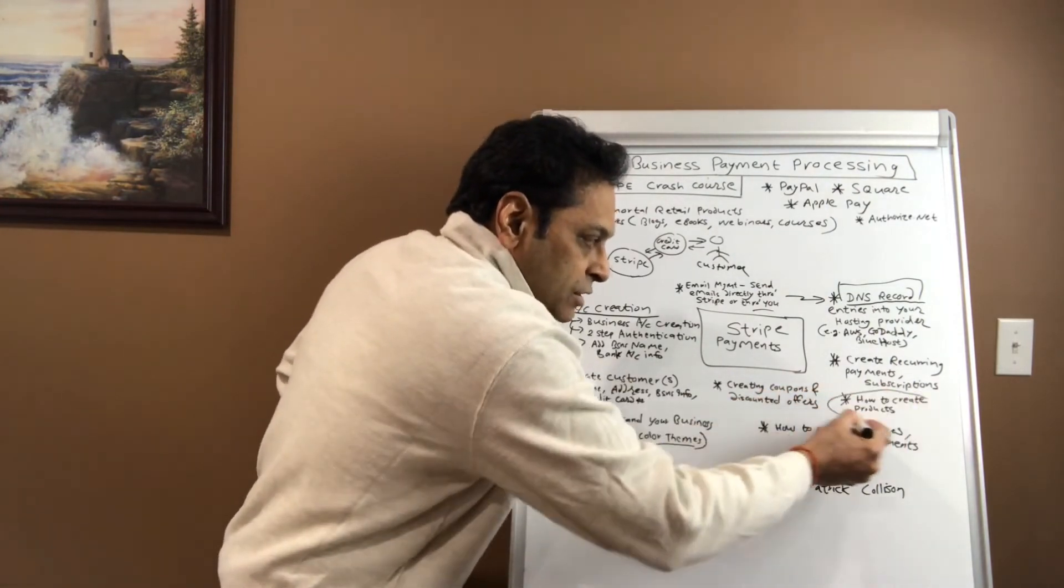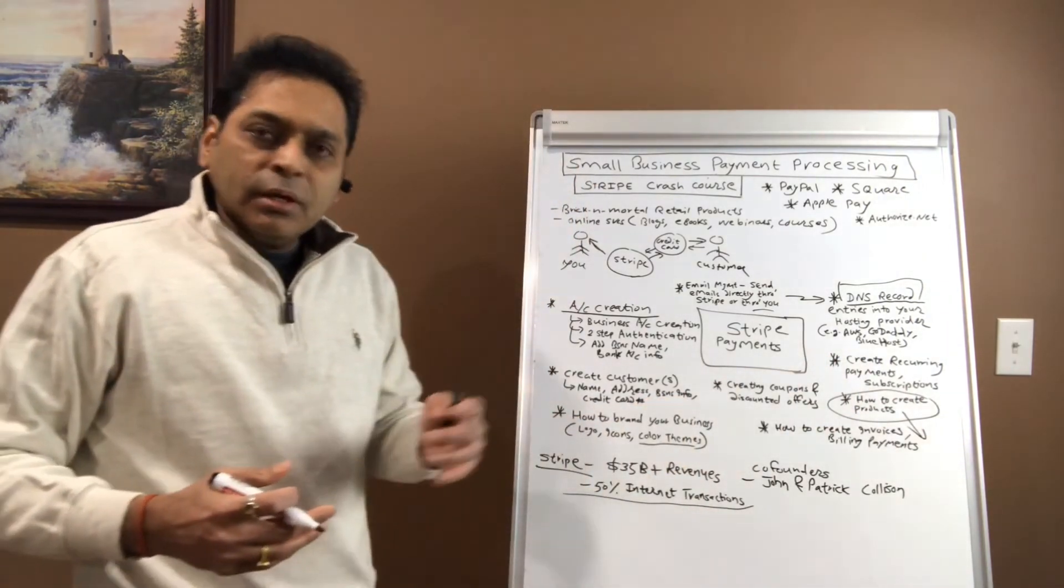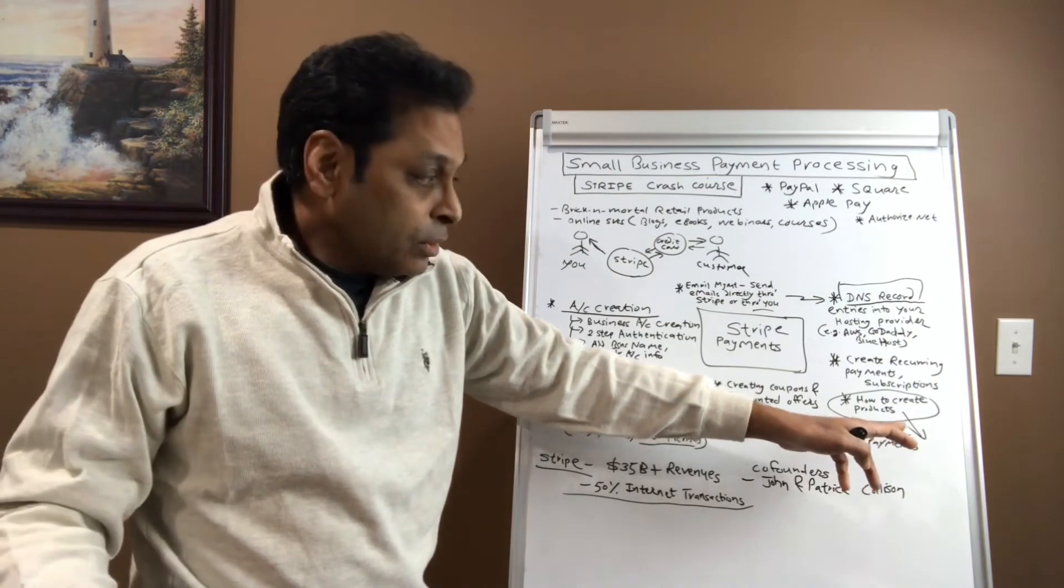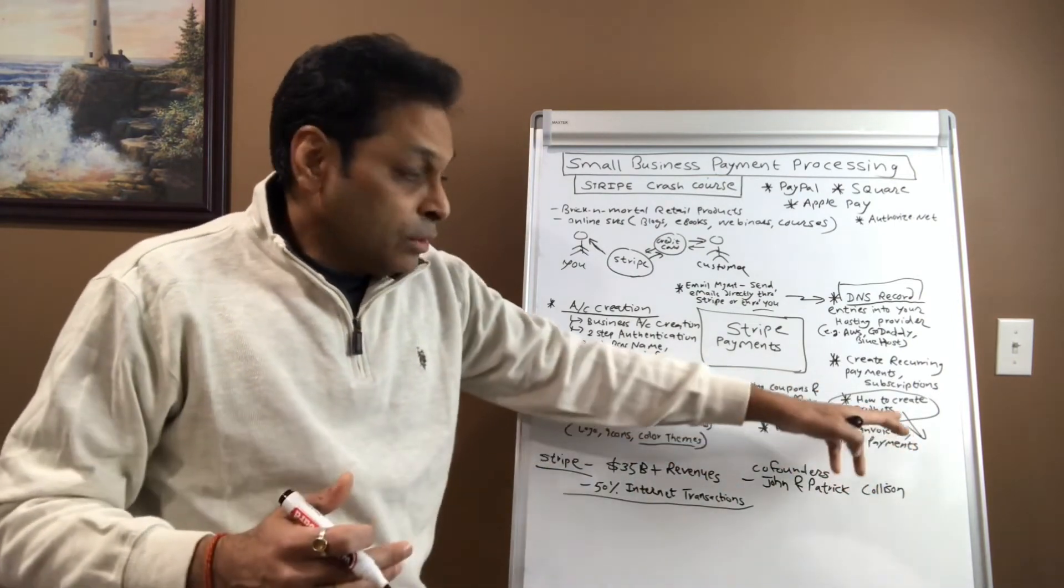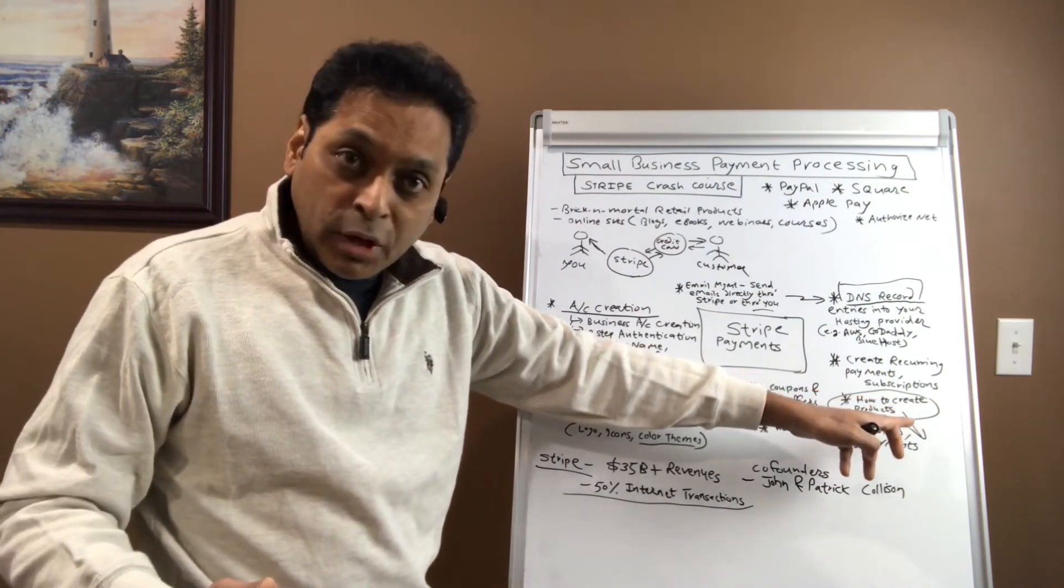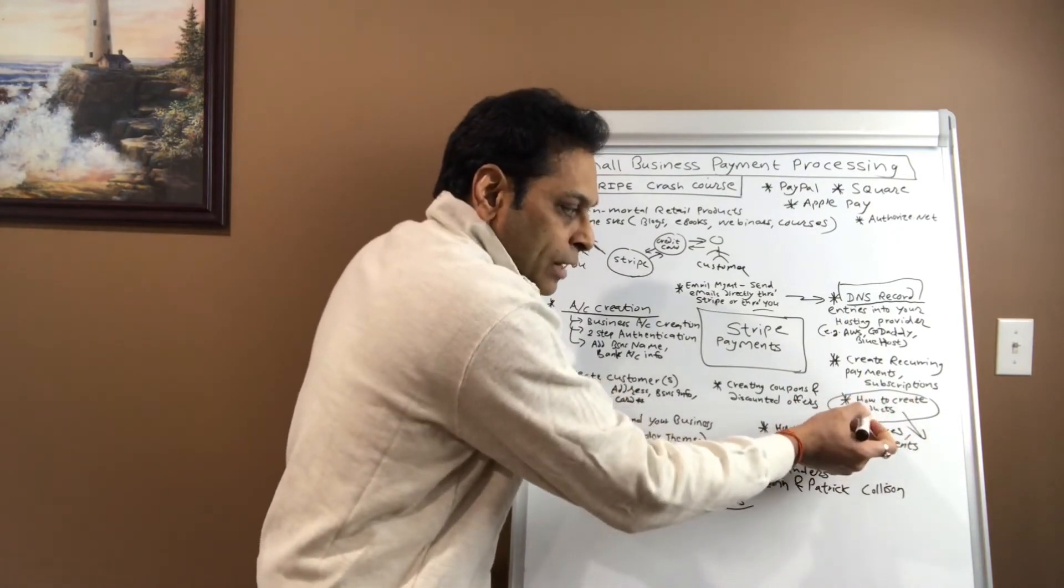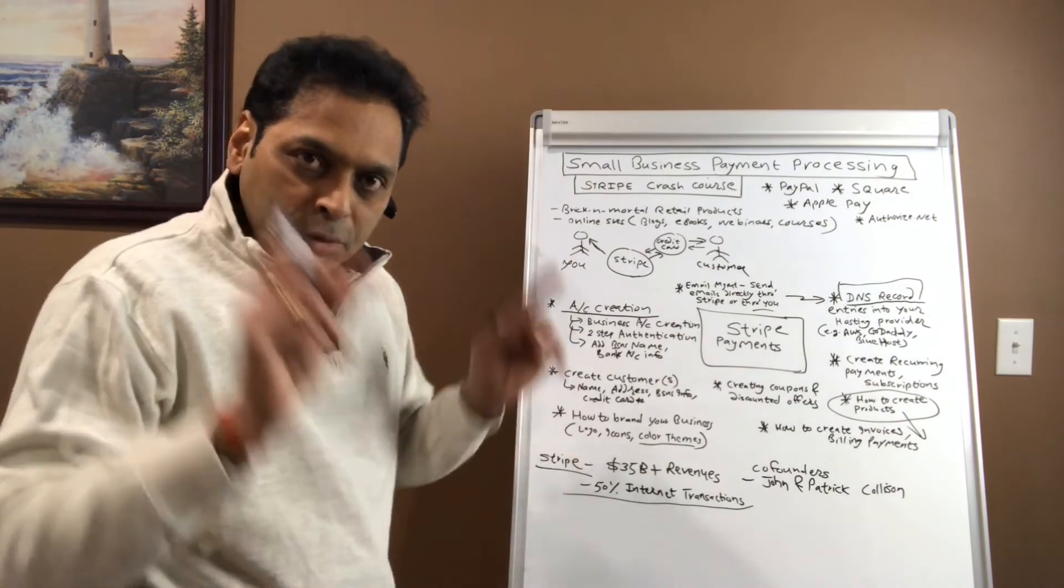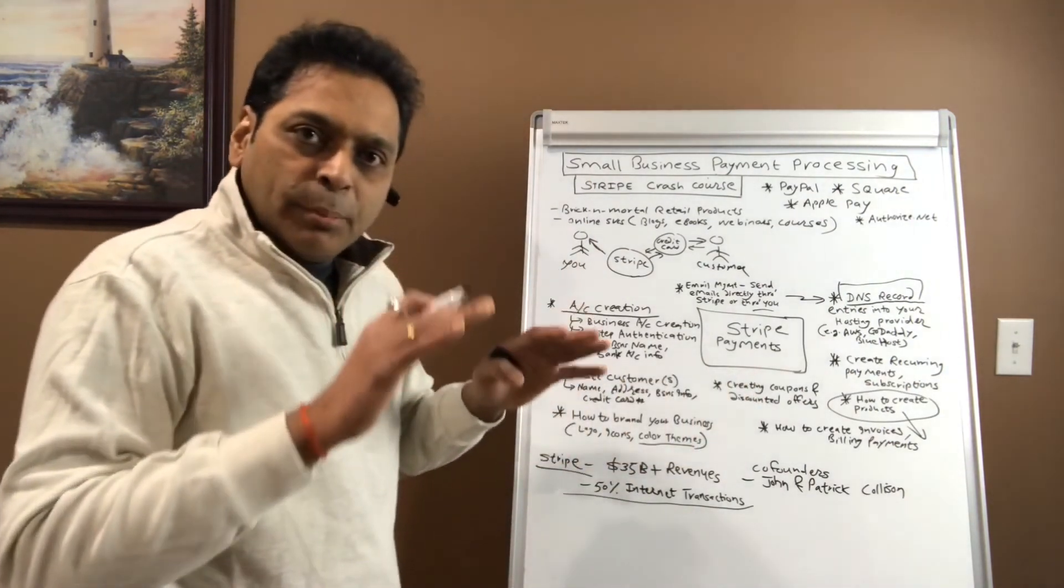The beauty of this is that you can actually create certain products—and by products I mean like website services, that could be one product; search engine optimization, that becomes your another product; social media management, that becomes your another product. All these products you can associate with your recurring payment, that is called the subscription model, and that is going to make your job quite easier.